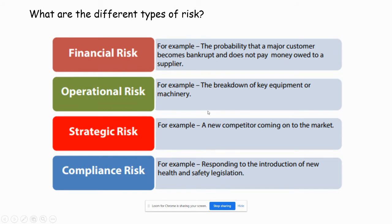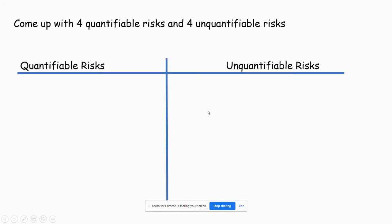So those are the four main types of risk. Now I want you to come up with four quantifiable risks and four unquantifiable risks. Quantifiable means you can put a number on it — a pound value on what you're risking. Unquantifiable means you can't put a number on it. Pause the video, have a go, and then I'll talk you through some possible answers — certainly not limited to the ones I give.